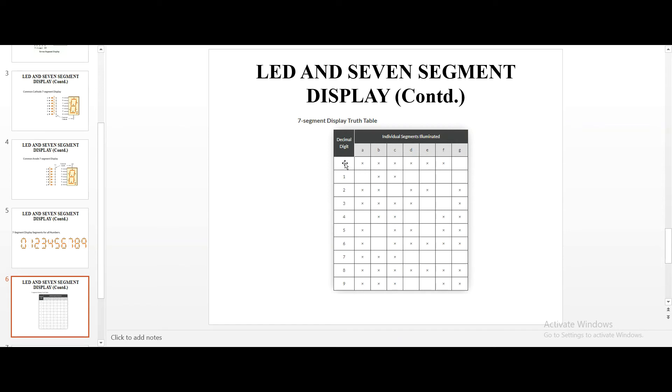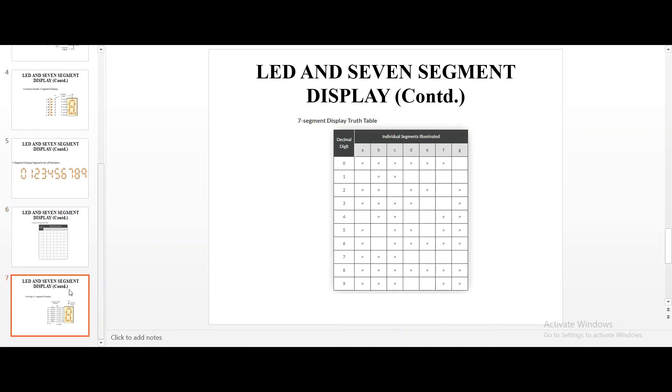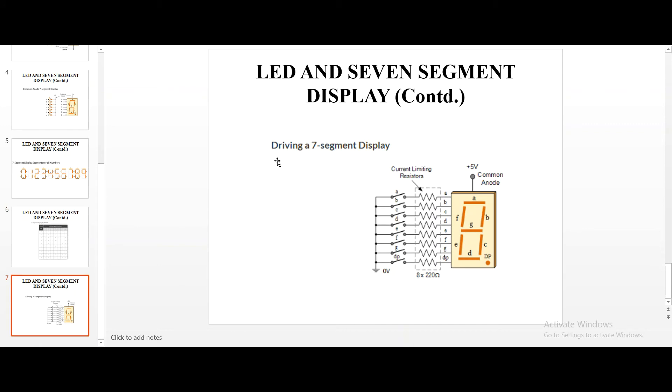But here are the truth table for decimal digits 0. As we already saw in the previous slides, except G, all are powered. So, all the segments will be illuminated. For 1, the respective segments will be illuminated. Similarly, for 0 to 9, everything goes by.